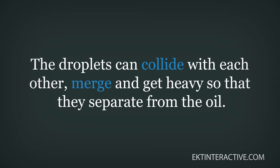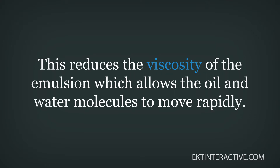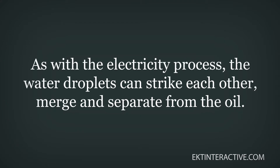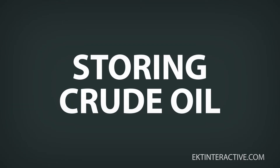Chemicals called emulsion breakers or demulsifiers may be added to make the droplets of water merge. As the water droplets combine, they get bigger and heavy enough to be separated from the oil. Electricity can also be used to break the emulsion — when the water droplets take on an electric charge, they move rapidly, collide with each other, merge, and get heavy so that they separate from the oil.